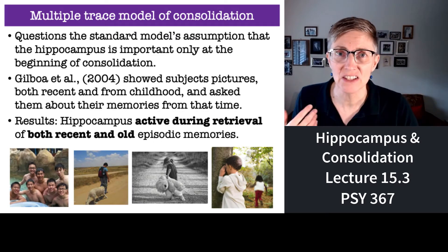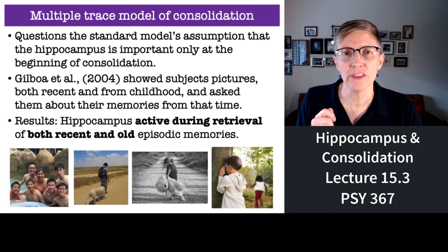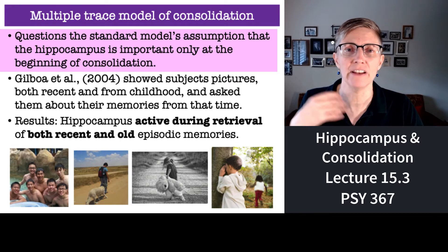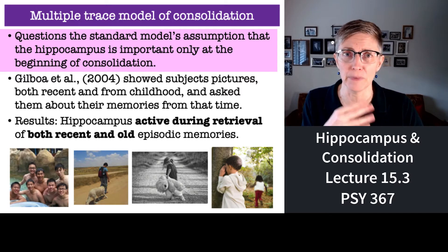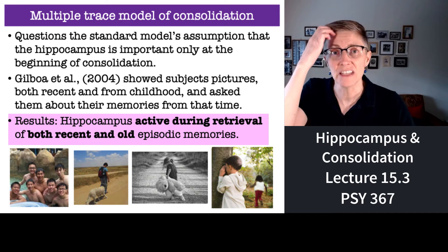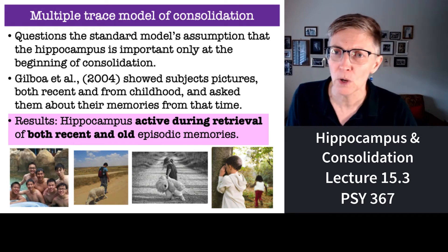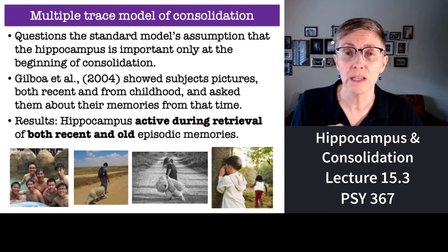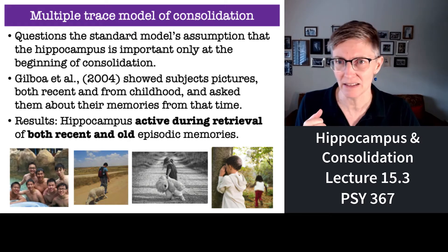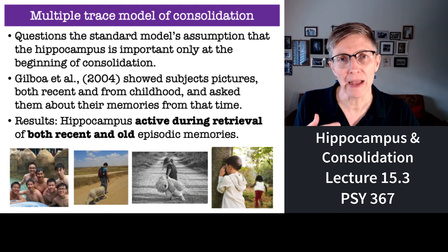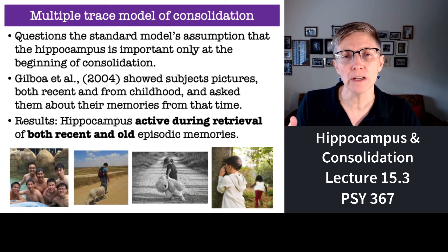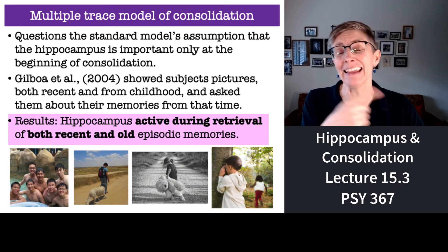The second theory is called multiple trace theory of consolidation. It challenges the standard model's assumption that the hippocampus is only involved during initial consolidation — that once information is in the cortex, you don't need the hippocampus anymore. Multiple trace theory argues the hippocampus is involved in more than just the initial consolidation. A brain imaging study had people look at pictures and measured brain activity as they thought about memories from different time periods, finding that the hippocampus was active during memory retrieval for both old and new memories.